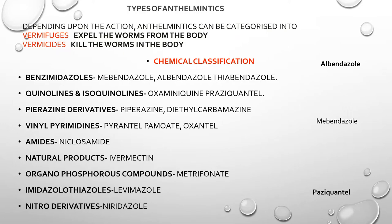Now let's discuss the chemical classification of anthelmintics. These drugs include oxamniquine, praziquantel, piperazine derivatives (piperazine and diethylcarbamazine), vinyl pyrimidine, pyrantel, oxantel, amides, niclosamide (very important), and natural products including avermectin (very important), organophosphorus compounds, metrifonate, imidazothiazole, levamisole, and nitro derivatives like niridazole.